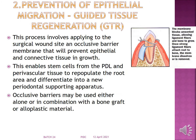Next, the prevention of epithelial migration by means of guided tissue regeneration. This process involves applying an occlusive barrier membrane to the surgical wound site that will prevent the growth of epithelial and connective tissue in this area, blocking unwanted tissue while allowing ligament fibers and bone to grow.